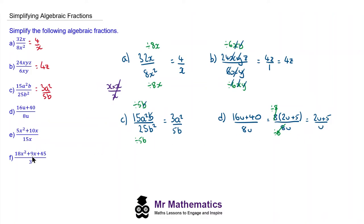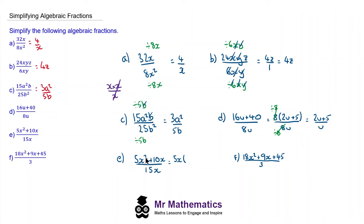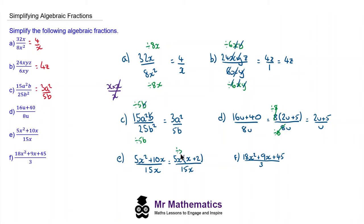Do you want to try questions e and f? Pause the video and resume when you're ready. Welcome back. For question e, we factorize the numerator first. 5x is a common factor of 5x squared and 10x, so we put 5x outside the brackets: 5x times x makes 5x squared, and 5x times 2 makes 10x. This is over 15x. The highest common factor of numerator and denominator is 5x, so dividing gives us (x + 2) over 3.